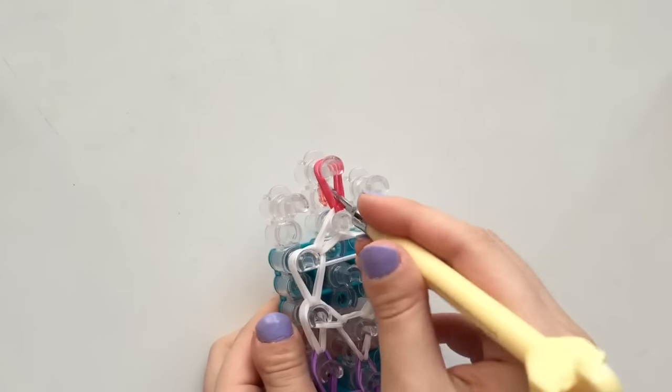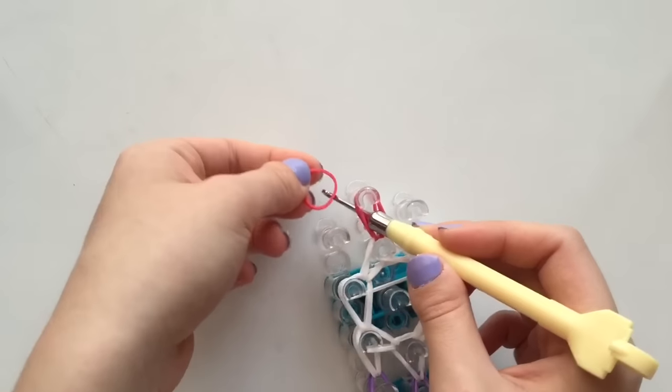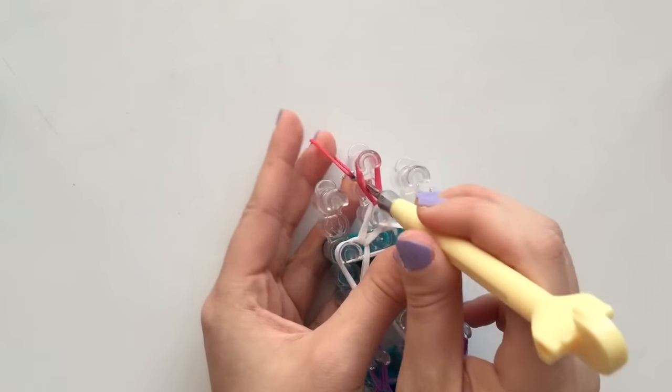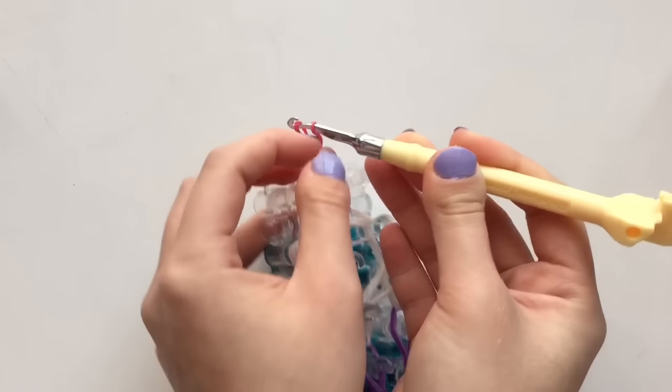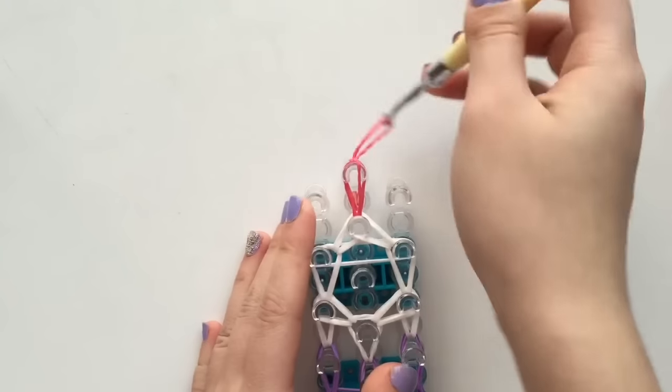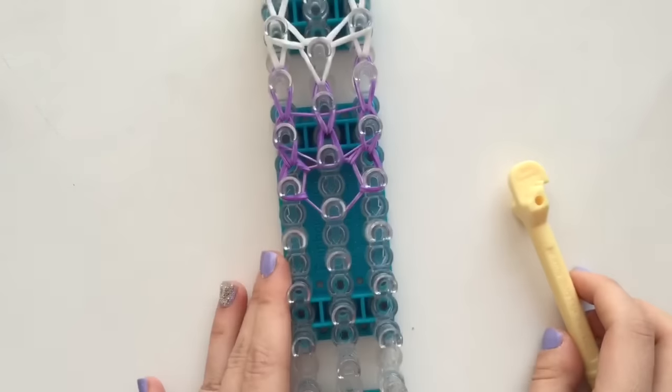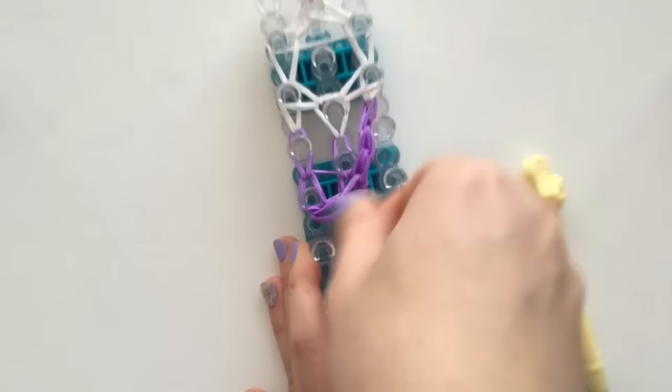And then now, for the slip knot, take one single red rubber band and stick your hook in that peg and pull the red rubber band through like that and place the open end on the hook. And take the second one and pull it over the first. So that's what your slip knot should look like. And then you can remove your charm off the loom.